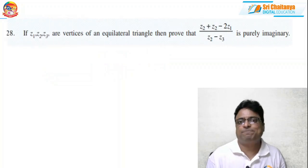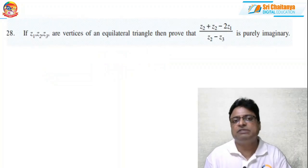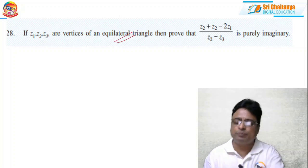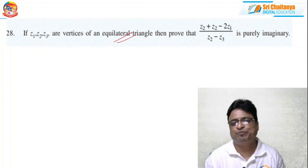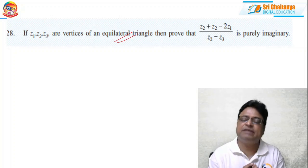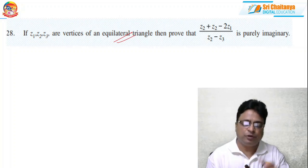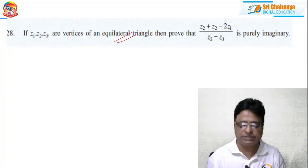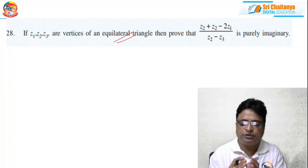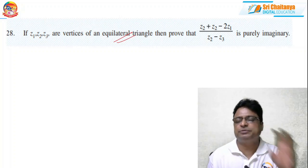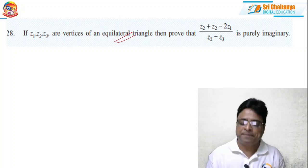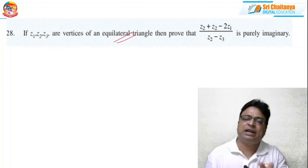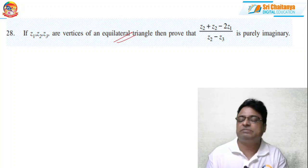What is problem number 28? Z1, Z2, Z3 are vertices of the equilateral triangle — that is given. We have to prove that this expression is purely imaginary. Whenever these kinds of questions are given, you have to convert the entire Z1, Z2, Z3 in terms of one particular vertex — either Z2 in terms of Z1 or Z1 in terms of Z2 — and substitute all those values in the given rational function to get the answer. For that I am applying the rotation method, also called Coni's method.